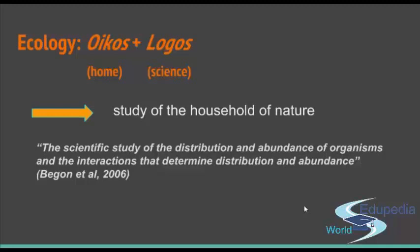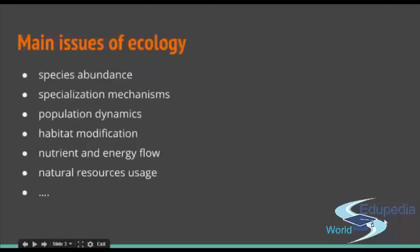Here is a short list of some phenomena that ecology as a science works on: species abundance, specialization mechanics, and population dynamics — three types of behavior, or how populations of organisms influence the surrounding. On the other hand, you have habitat modification — the response of a habitat to the population living within it. And then there is nutrient and energy flow, which is something that ecology specifically takes care of.